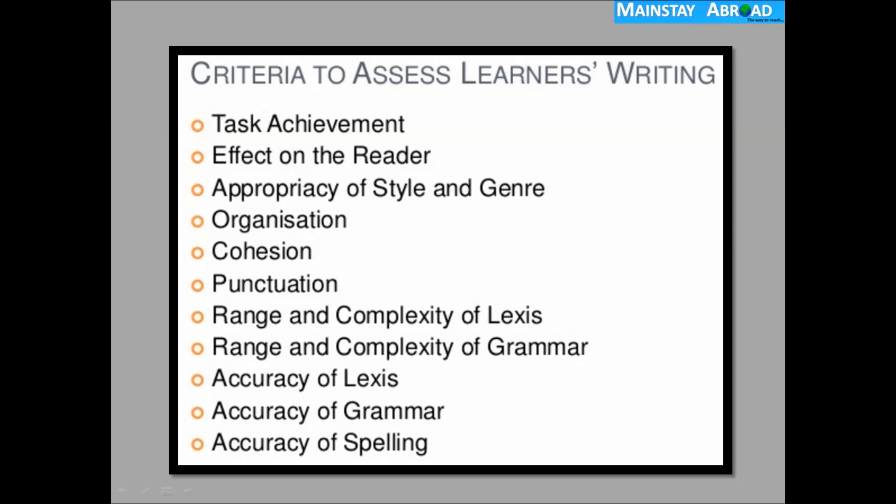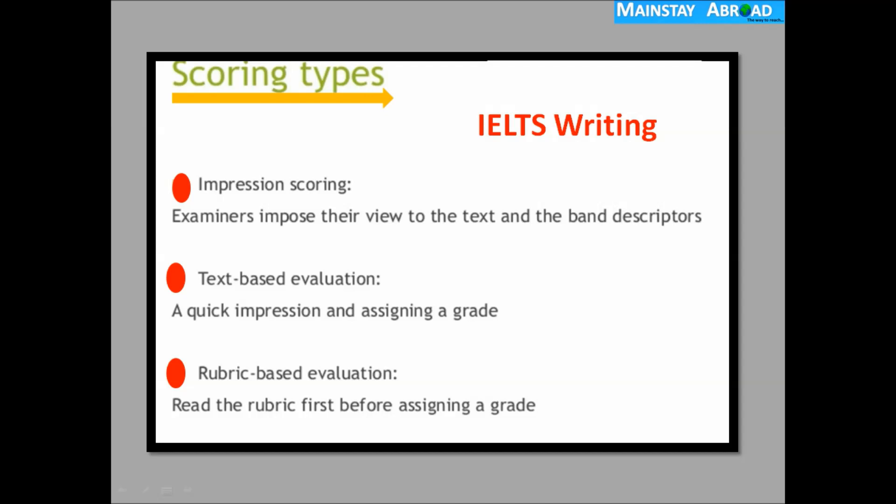Now you need to understand the scoring types of IELTS writing. This information is given by most experts, professionals, and experienced IELTS examiners. There are three things to understand: impression scoring — where examiners impose their view on the text against the band descriptors; text-based evaluation — a quick impression before assigning a grade; and rubric-based evaluation — reading the rubric first before assigning a grade.